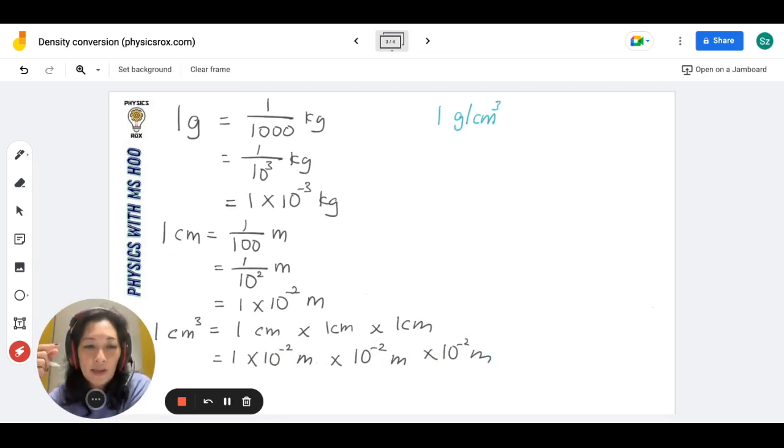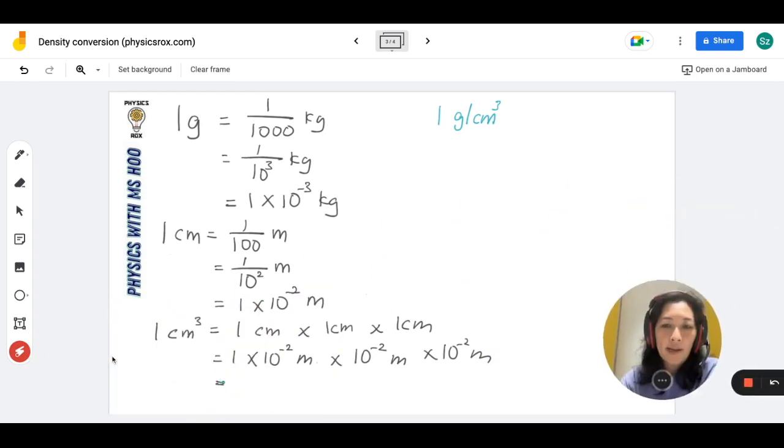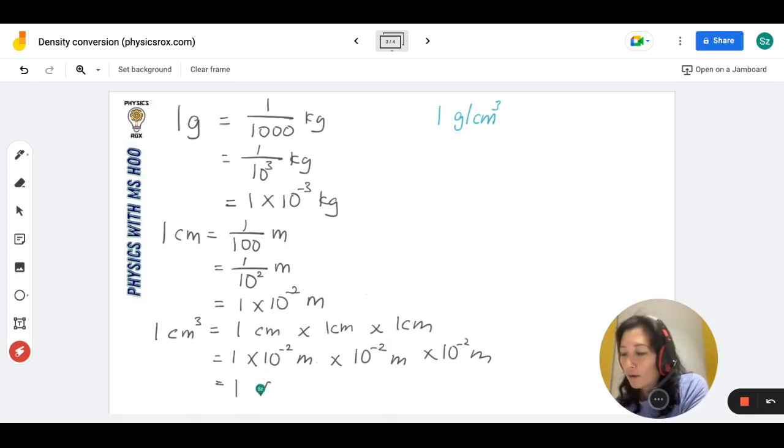And you can see how easy it is to get the answer here. 10 power of negative 2 times 10 power of negative 2 times 10 power of negative 2 gives us, let me move this out of the way, this gives us 1 times 10 to the power of negative 6 meters cube. So much easier to get a straightforward answer, right? Instead of counting how many zeros, 2, 3, 4, 5, 6, no, right? So now that we know 1 cm cube is 1 times 10 to the power of negative 6 meters, we're going to take these two numbers, and we're going to put that into the conversion.